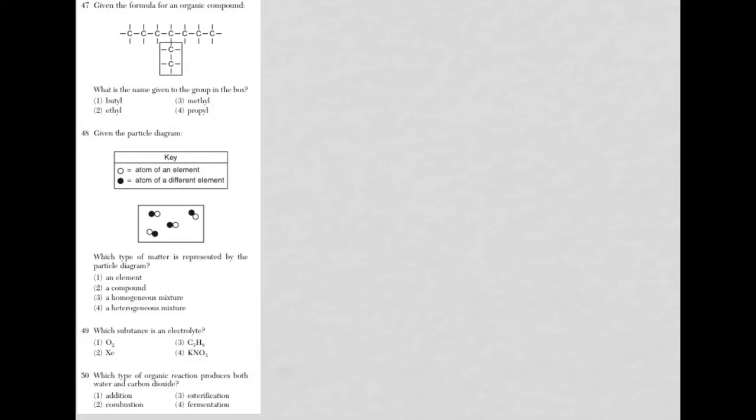All right, for 47, we're given an organic compound, and you see that we have a branch here that's boxed, and you're asked the name given for the group. Well, you've got two carbons, so you need the prefix for two carbons.